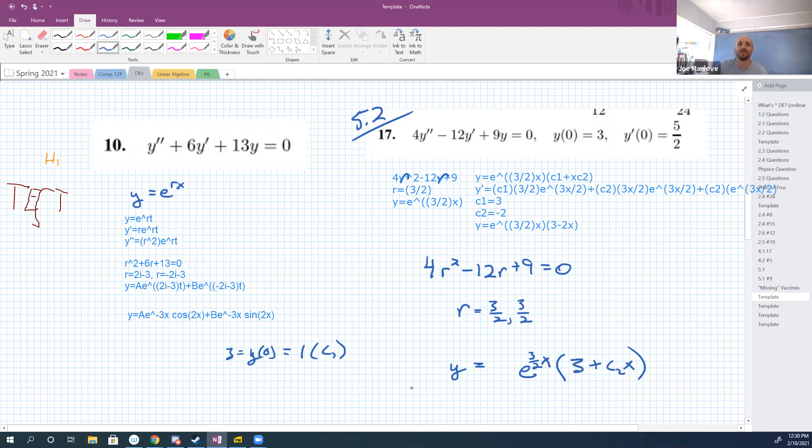All right, so you calculate y prime and you have that here for me. It's nine halves e to the three halves x plus c2 times 3x over 2 e to the 3x over 2.